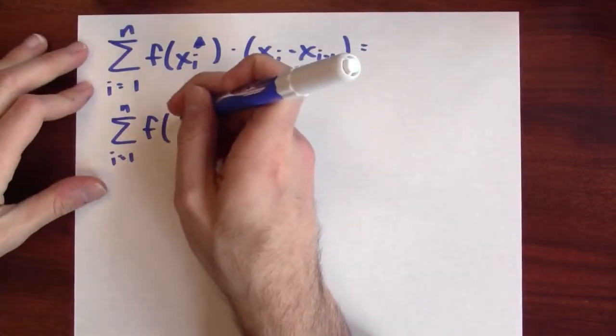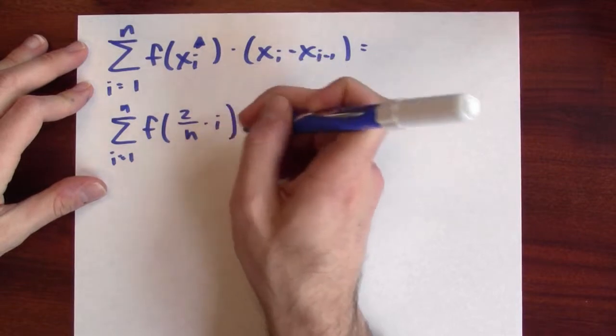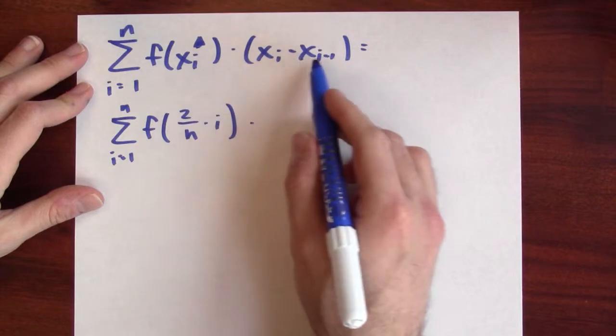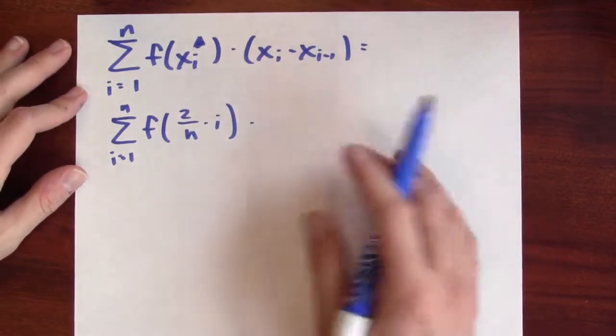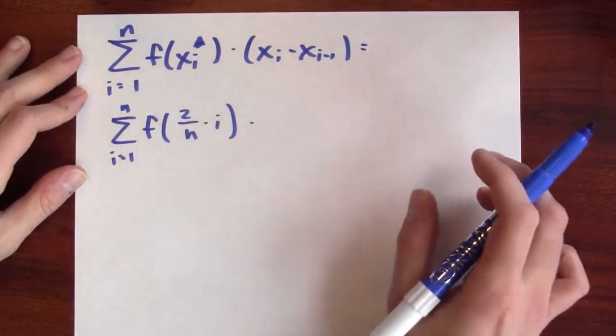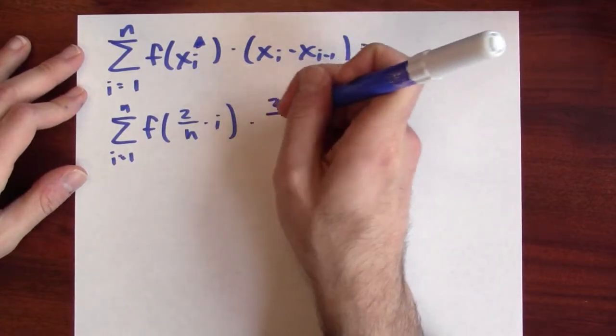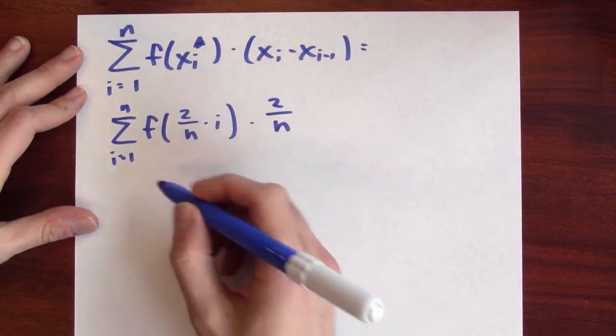So I can just plug in 2 over n times i. And x sub i minus x sub i minus 1, that's the width of the i-th sub-interval in my partition. But I rigged it so that all of the sub-intervals have the same equal width. They've all got width 2 over n. So that's the sum that I want to calculate.